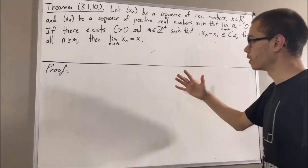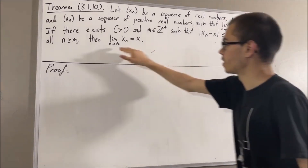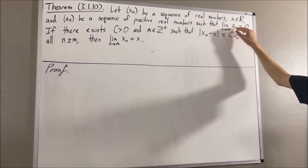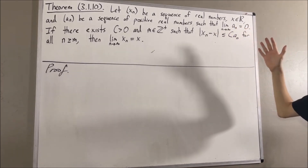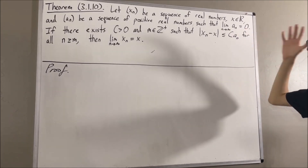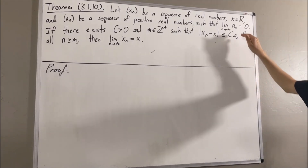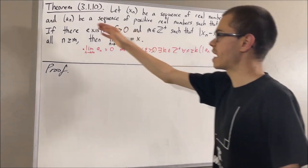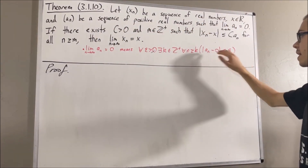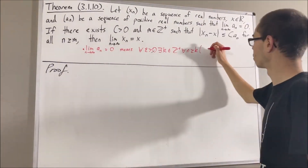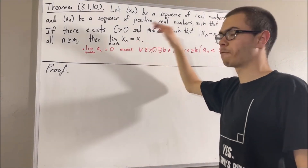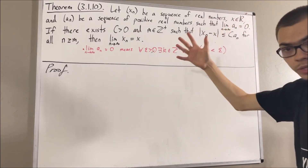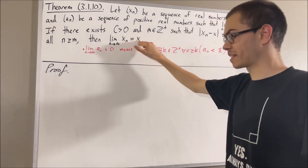Now before we get into the proof, I would first like to clarify what these two statements mean. By definition of the limit of a sequence, to say that an converges to zero means that for every epsilon greater than zero, there exists a positive integer k such that for all positive integers n greater than or equal to k, the absolute value of an minus zero is less than epsilon. And since an is a sequence of positive real numbers, this is the same as saying an is less than epsilon. Similarly, to say that xn converges to x means that for every epsilon greater than zero, there exists a positive integer k such that for all positive integers n greater than or equal to k, the absolute value of xn minus x is less than epsilon.